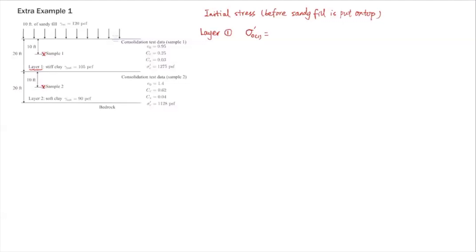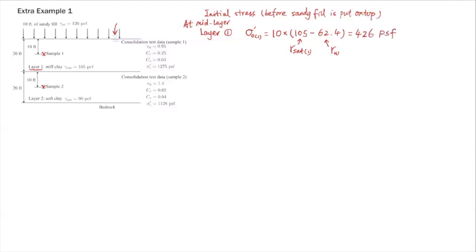The middle of layer 1 is 10 feet below the ground surface, and the water table is also at the ground surface, so we have 10 feet of saturated clay. The effective stress is 10 times the buoyant unit weight: 10 × (105 − 62.4), where 105 is γ_saturated of layer 1 and 62.4 is γ_water. This gives σ₀₁' = 426 PSF — the initial effective stress at the middle of layer 1.